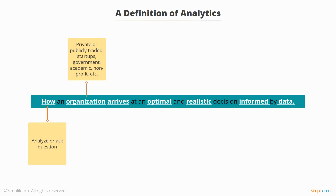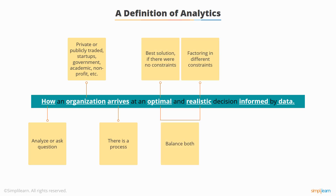The 'how' implies there's a process, a workflow, a way to get there — we're trying to answer a specific business question. 'Arrives' implies we start from somewhere and want to get to an answer or solution. 'Optimal and realistic' are super important: optimal is the best solution regardless of constraints, but realistically there are always constraints — budget, resources, time, tools, technology, legal aspects, ethical aspects, and politics. We want to find a balance between what would be the best solution versus what realistically we can do. Analysts often make recommendations that would be fantastic but have so many constraints that they can't be done. If we find the right balance, there's no excuse not to do it.